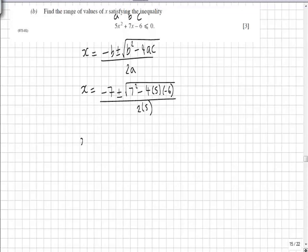So x is therefore equal to minus 7 plus or minus the square root of 49. Minus 4 times 5 is 20, times minus 6 is 120.